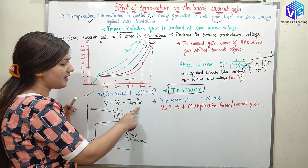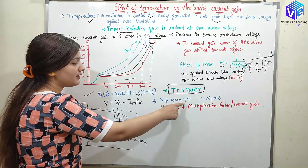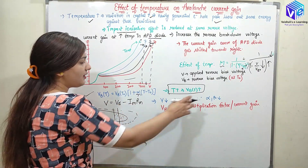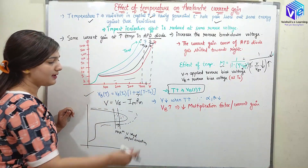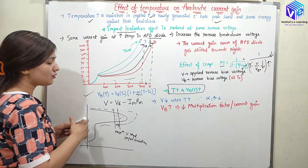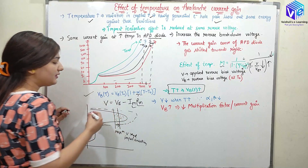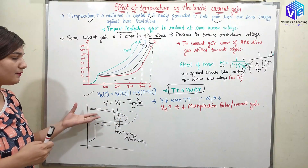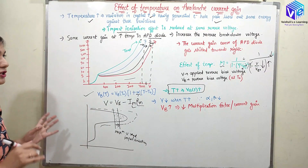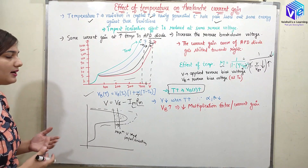Now V will be equal to VA minus IM times RM. When V is decreased as temperature is increased, we can see that alpha and beta are going to decrease. When VB is increasing, the multiplication factor or the current gain is decreasing. This is the equation for the responsivity — the current with the help of the voltage. When the voltage is increasing, the responsivity and current are also affected with temperature. This is all about the effect of temperature on the avalanche current gain.